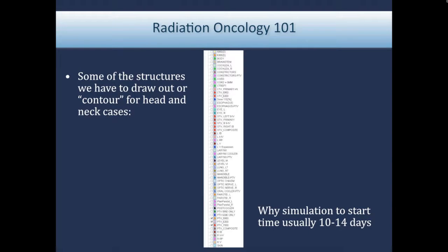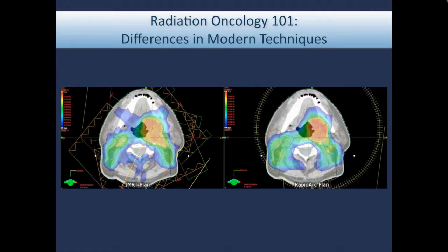Radiation oncology planning for head and neck is probably the most complicated of any site, because of the number of structures we need to recreate in each patient for their treatment. As radiation oncologists, we need to recreate the patient's anatomy in three dimensions — drawing out every normal structure we care about, all the target structures, including where the primary tumor is, the lymph node regions that are involved, and the lymph node regions that are at risk.